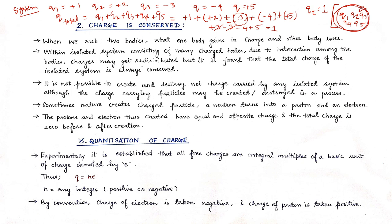Going on to the second basic property: charge is conserved. What does conservation mean? Conserve implies there is no reduction, no production, no destruction. In the previous class we read about silk being rubbed with plastic as well as a glass rod. In these cases there is distribution and redistribution of charges, but no production and no destruction of charges.